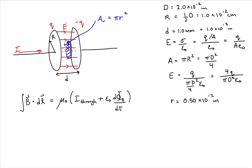The Ampere-Maxwell law equation tells us that a magnetic field can be created by a current through a loop or by the time rate of change of magnetic flux. So we need an expression for both the current through the Amperian loop and the electric flux through our Amperian loop. The Amperian loop is the loop we represent inside, in between the plates of the capacitor.